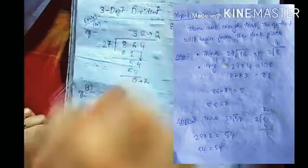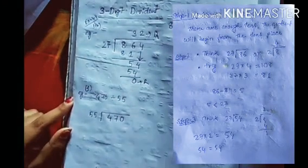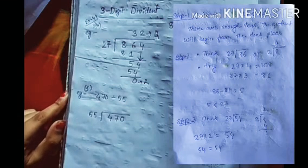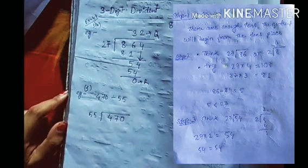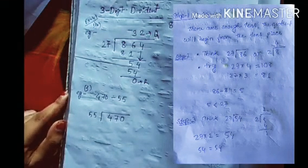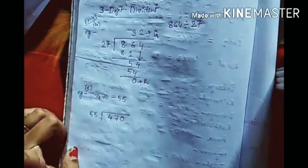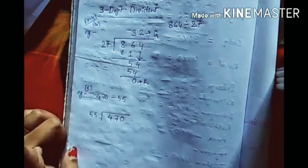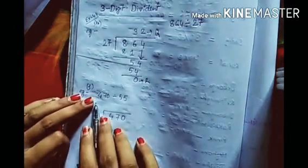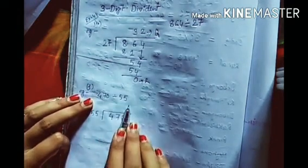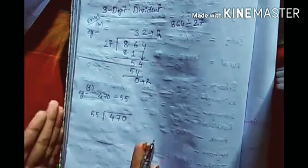The quotient is 32 and the division is complete. Like this way, you have to solve the other problems also. I will show one more - from the f number - it is 470 divided by 55. I will show you how to do this step by step.